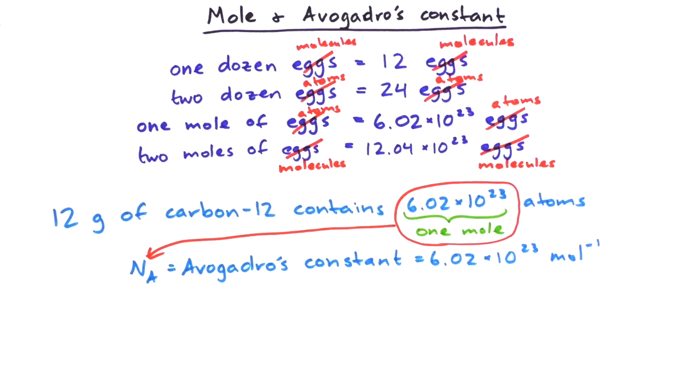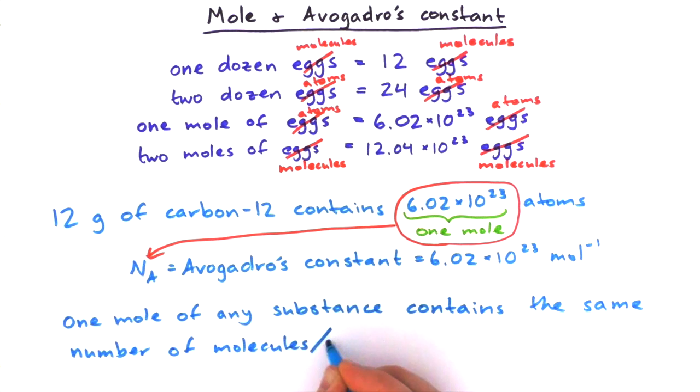We don't just use this for carbon. We can use it for any substance. One mole of any substance contains the same number of molecules or atoms as there are in 12 grams of carbon-12.